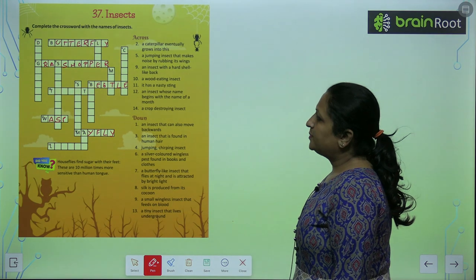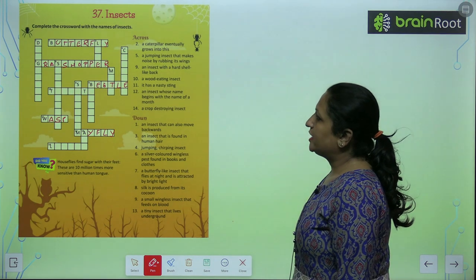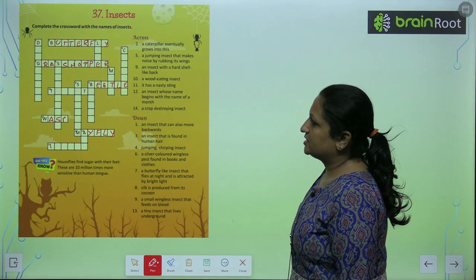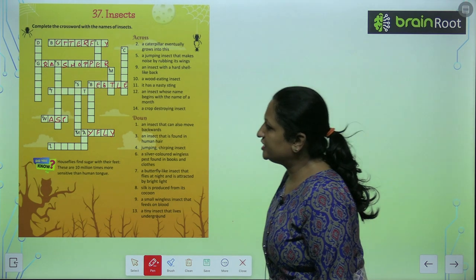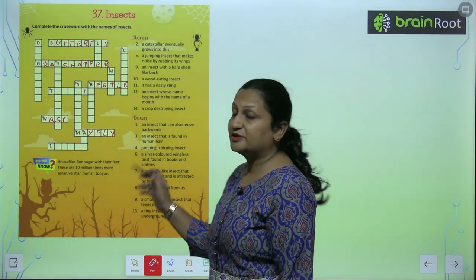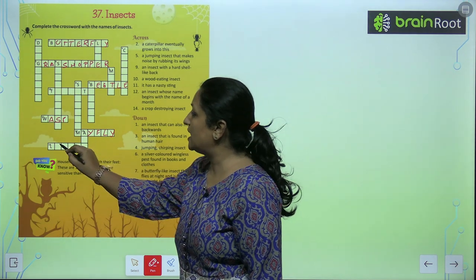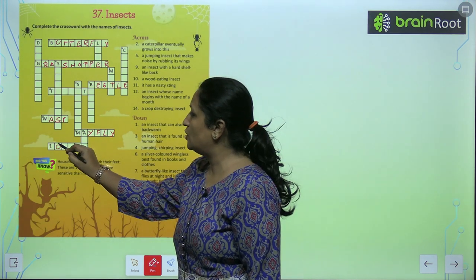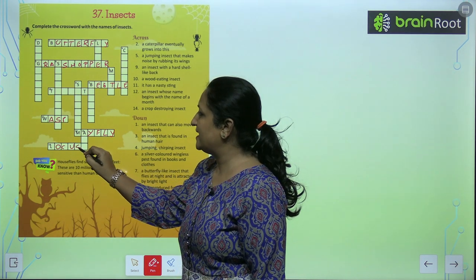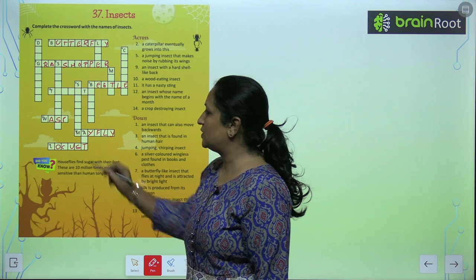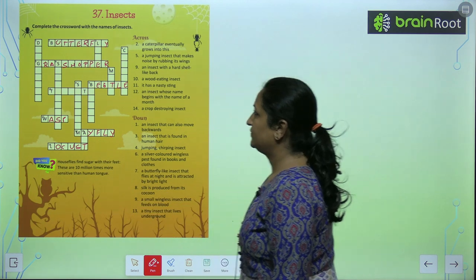A crop destroying insect. Number 14 peh hai: locust. L-O-C-U-S-T. Locust.